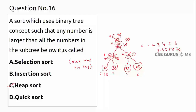The final sorted values extracted are 35, 30, 20, 10, arranged in this way. This is how sorting is achieved using the heap sort concept.